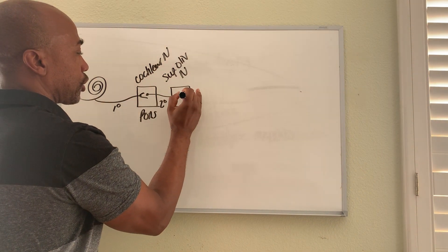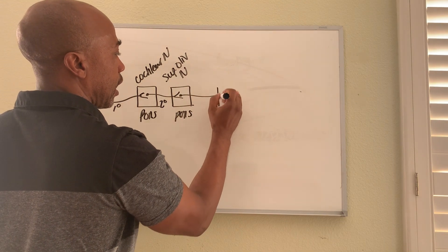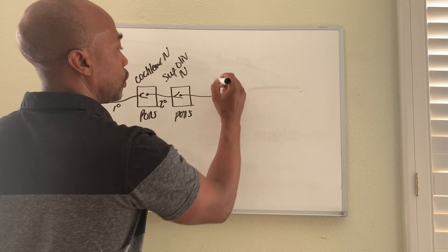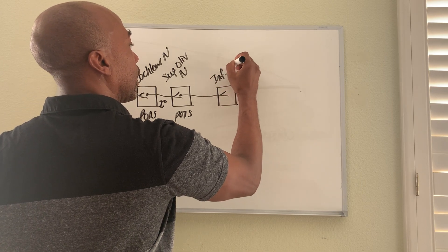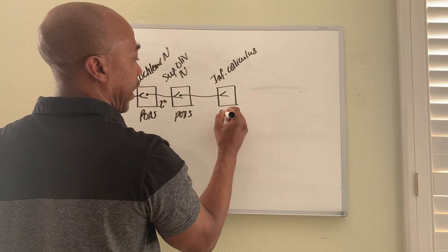And then your third order neurons travel a little bit further and stop in your inferior colliculus of the midbrain.